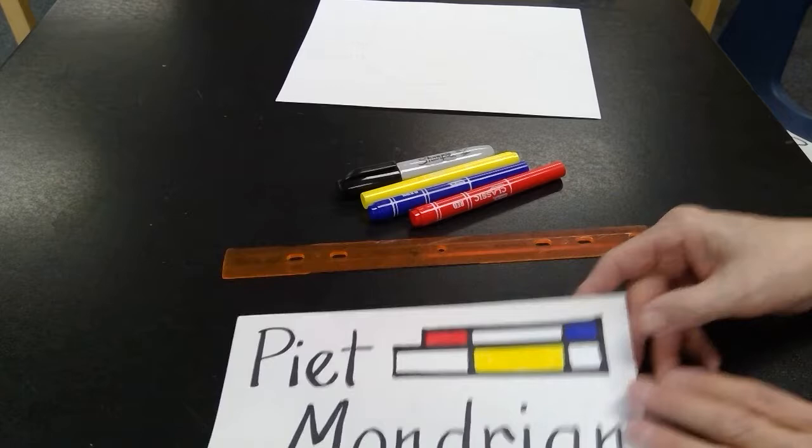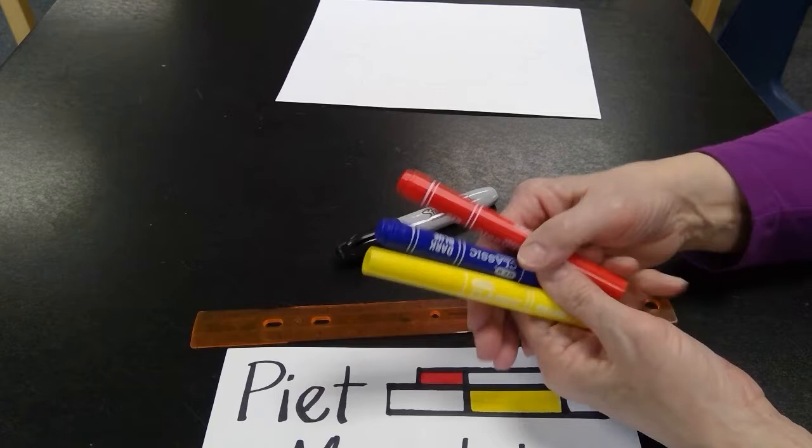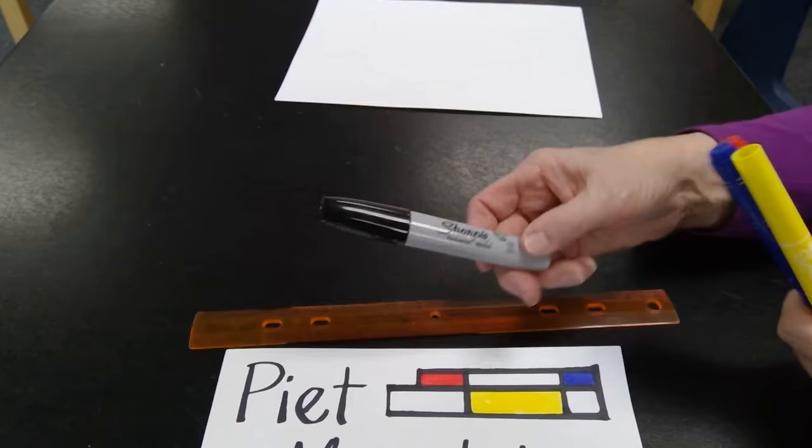So we're going to get started on our project. You will need a ruler, the three primary color markers, or if you want to use crayons or colored pencils, that's fine. So you're going to use yellow, red, and blue, and then a black marker.